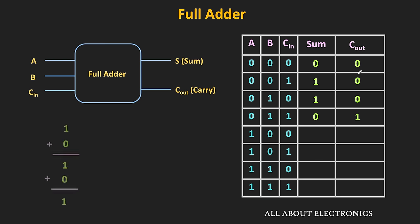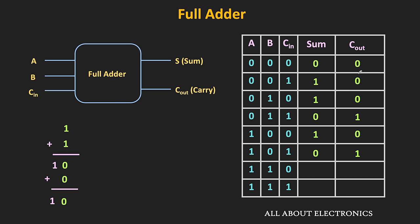In the fourth row the sum bit is equal to 0 and the carry is 1. In the sixth row, 1 plus 0 is equal to 1, and 1 plus 1 is equal to 0 with 1 as carry, so the sum bit is equal to 1. In the seventh row, 1 plus 1 is equal to 0 with 1 as carry, and 0 plus 0 is equal to 0, so the sum bit is equal to 0 while the carry bit is equal to 1. Finally in the eighth row, 1 plus 1 is equal to 0 with 1 as carry, and 0 plus 1 is equal to 1, so the sum bit is equal to 1 and the carry bit is also equal to 1.